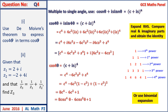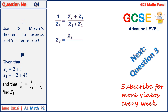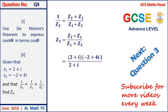The next part requires finding z3 from a given expression. Looking for the LCM, we have 1 on z3 equals z2 plus z1, all on z1 times z2. Solving for z3 gives z3 equals z1 times z2, all on z1 plus z2. Substituting values and simplifying gives minus 8 plus 6i, all on 5i.